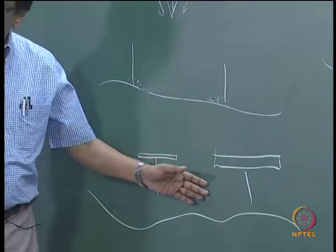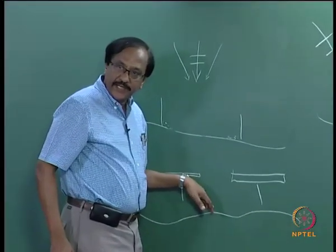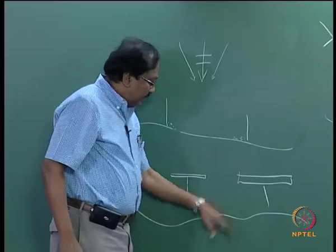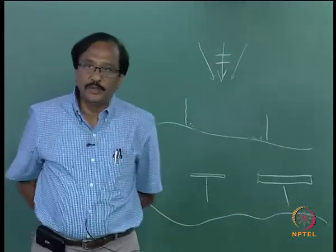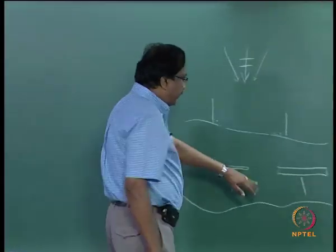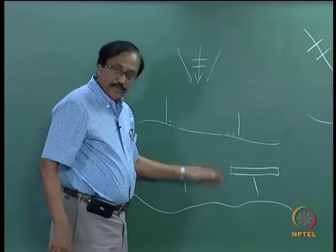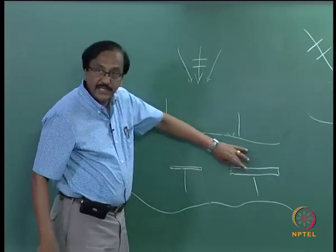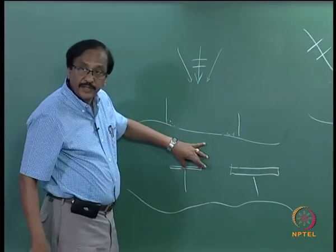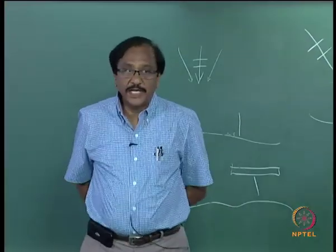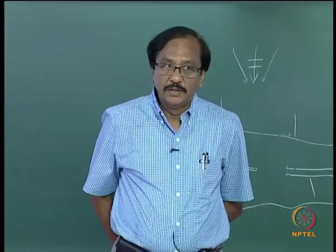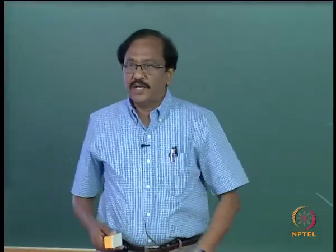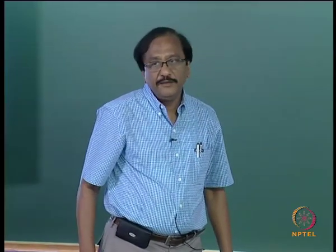T-groins allow the deposition of sand, and the horizontal members retain to some extent the sand which is likely to move back to the ocean. How much can be retained depends on the gap between the structures as well as their width. If the gap is too small, you might have problems related to rip currents. Although the structures look quite simple, they need a lot of investigation before implementation.